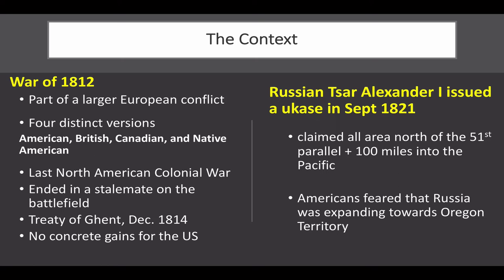Second, in 1821, the Russian Tsar proclaimed that all the area north of the 51st Parallel and extending 100 miles into the Pacific would be off-limits to non-Russians. Americans became very wary of Russian expansion southward from Alaska towards Oregon, and John Quincy Adams refused to accept this claim. Eventually, in 1824, the Russians and Americans managed to settle this dispute to their mutual satisfaction.